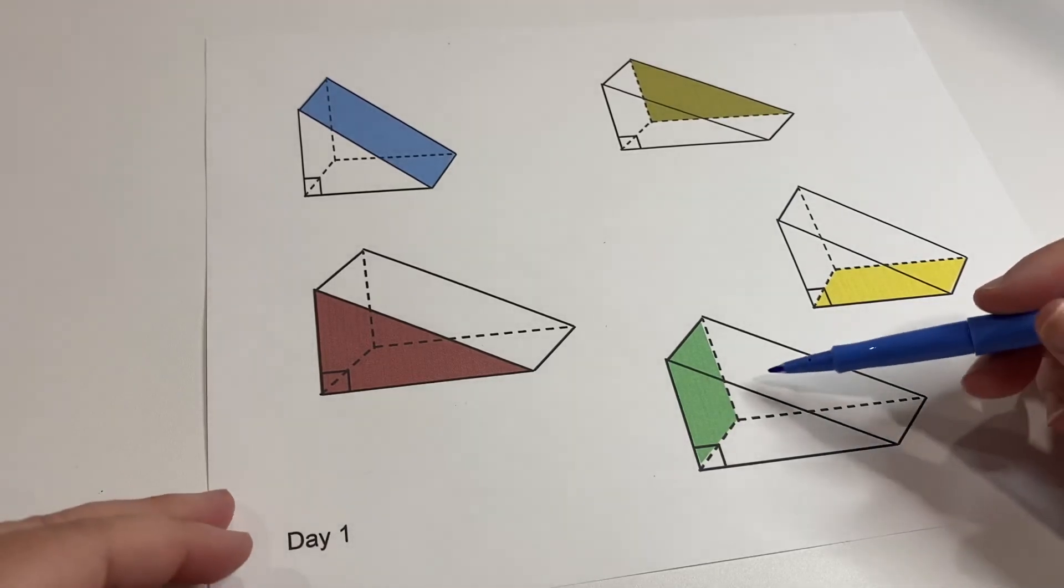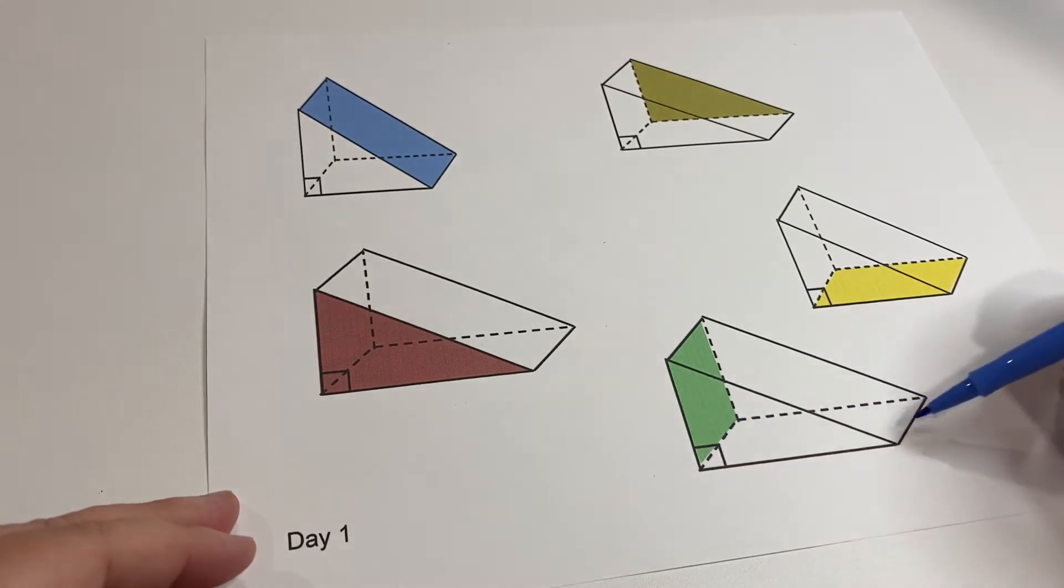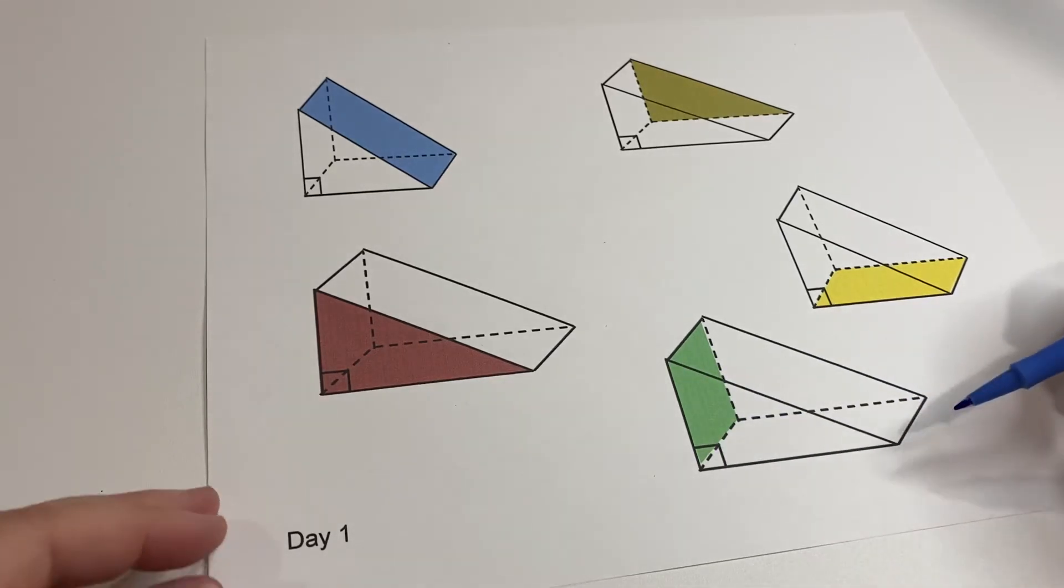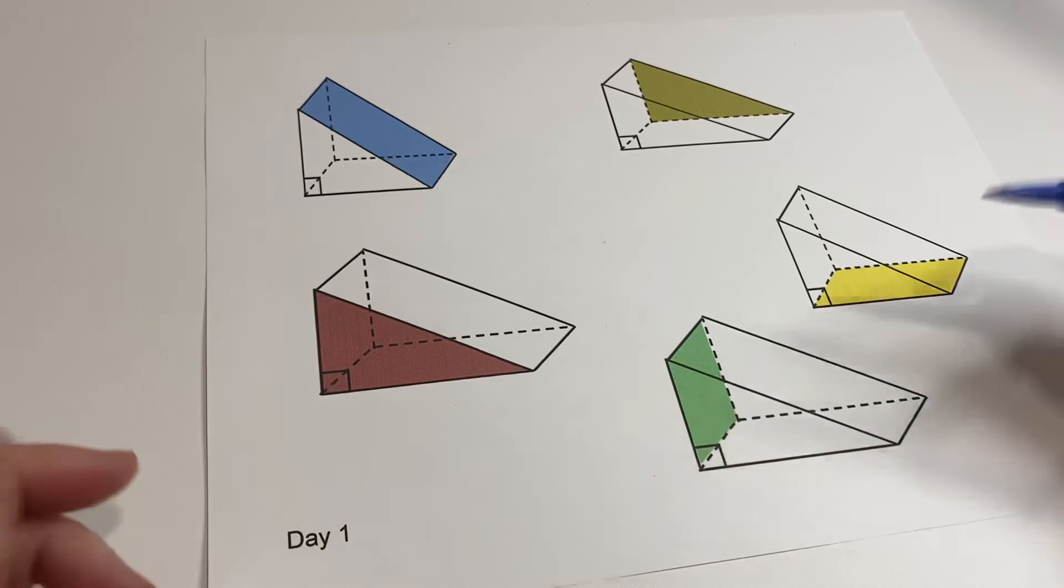But they're trying to show you, this is like a cheese wedge, or something like that that would be three-dimensional. A doorstop. Something that you would be able to touch, and hold, and spin, and turn.